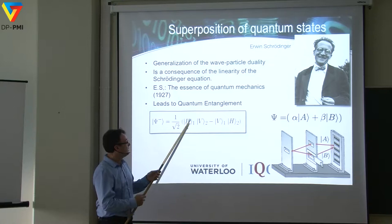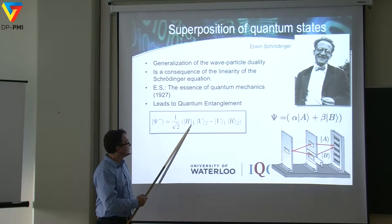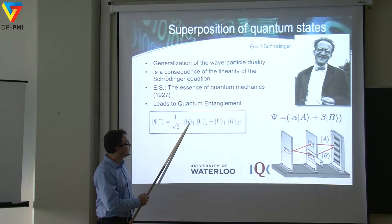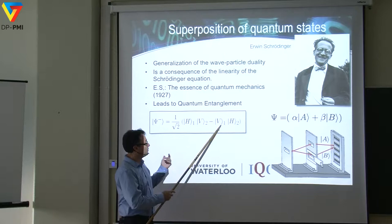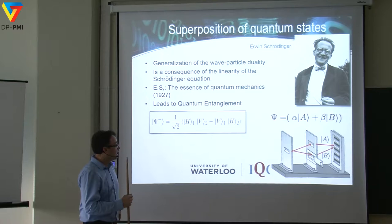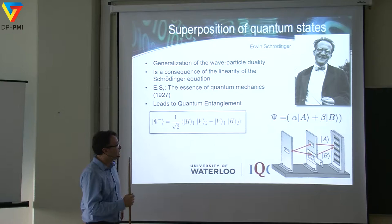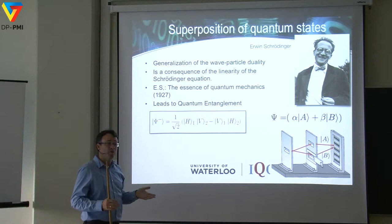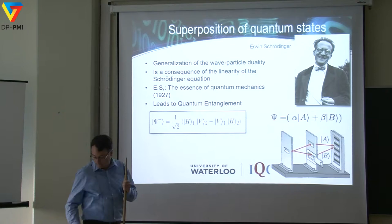The extension of superposition to more than one system is entanglement. For example, two photons can be in a correlated state: one horizontal and the other vertical, or in a superposition of the first one vertical and the other horizontal. That's one of the famous Bell states. Quantum entanglement pushes even further these counterintuitive features of quantum mechanics. I view entanglement as essentially the same thing as superposition, only over a more complicated, expanded system.